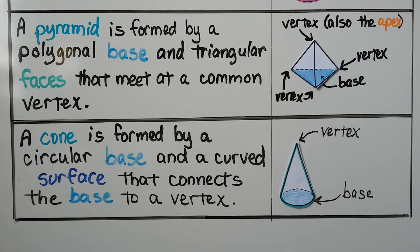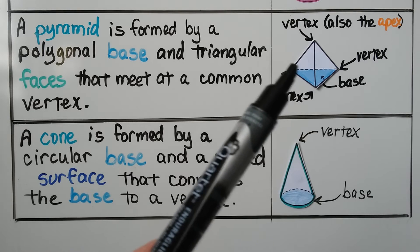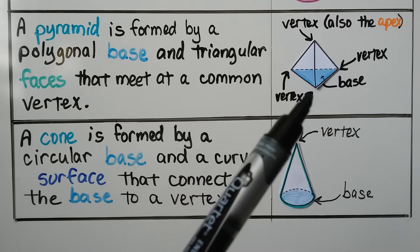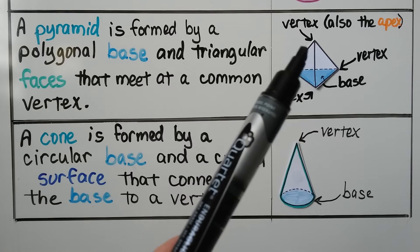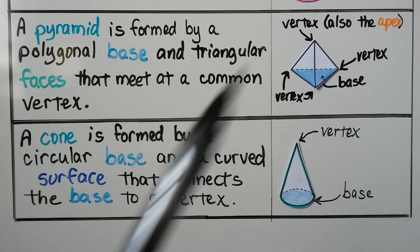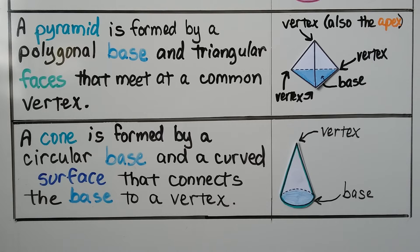A pyramid is formed by a polygonal base and triangular faces that meet at a common vertex. So these triangular faces are meeting at these vertices. And the top vertex can also be called an apex, and we'll talk about that in a second. And the cone is formed by a circular base and a curved surface that connects the base to a vertex, which can also be called an apex.